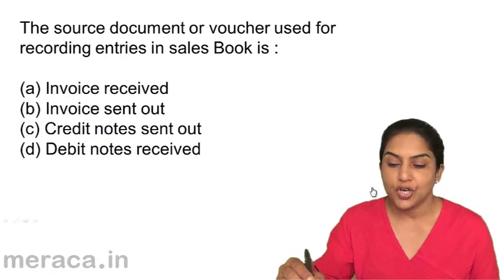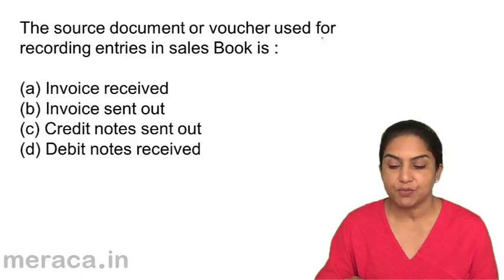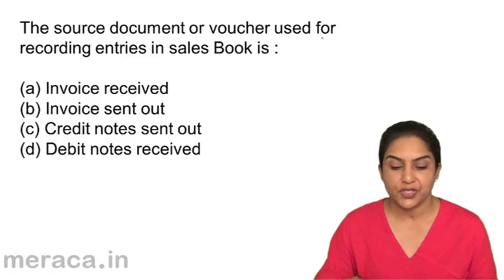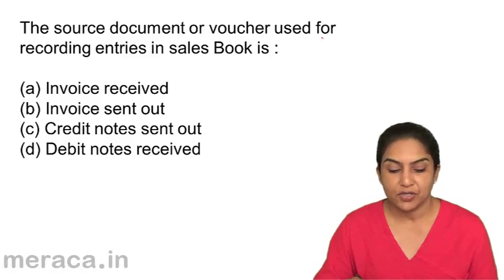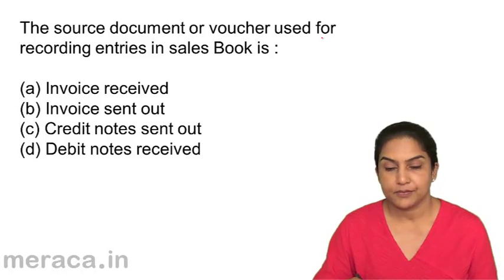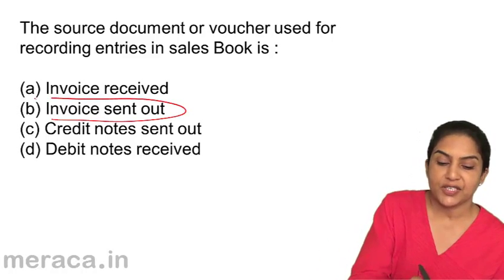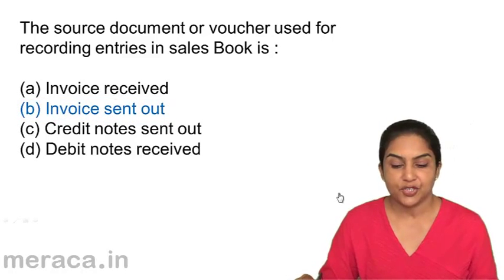The source document or voucher used for recording entries in the sales book is: a) invoice received, b) invoice sent out, c) credit note sent out, or d) debit notes received. For the sales book, we send the invoice — invoice sent out. Correct answer should be b.